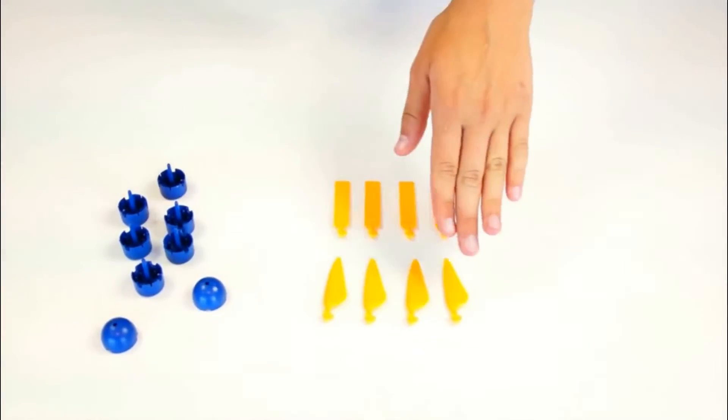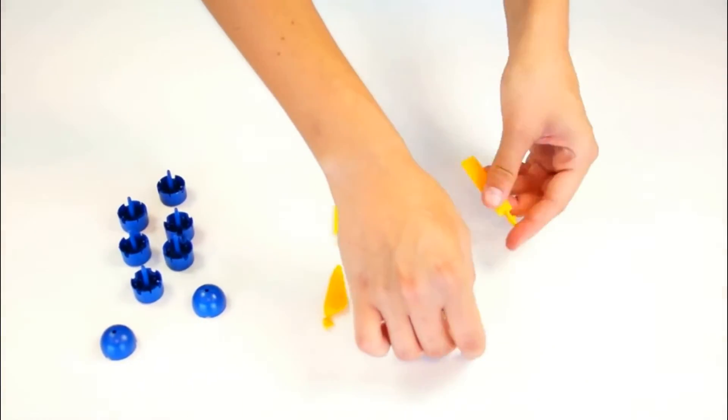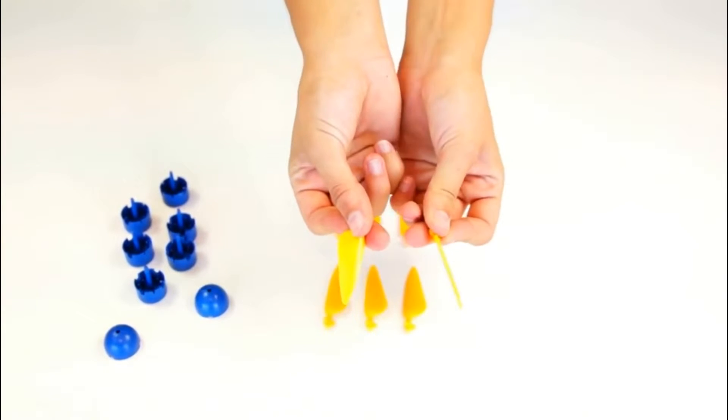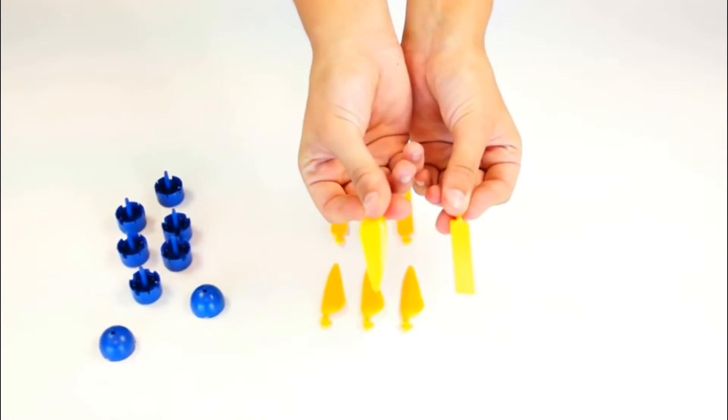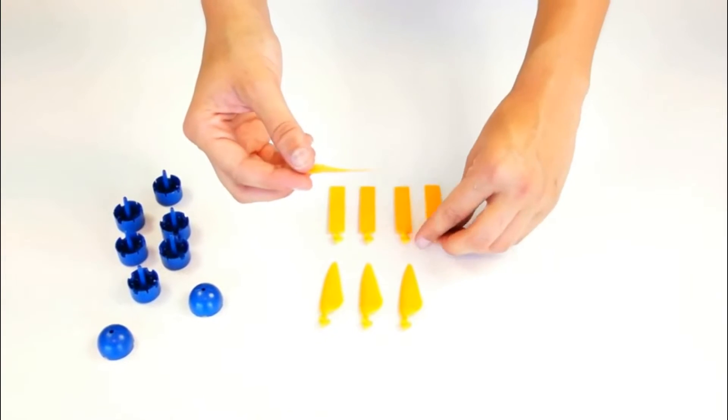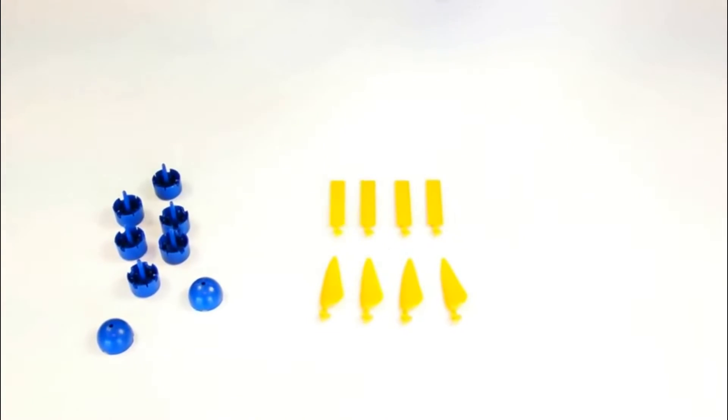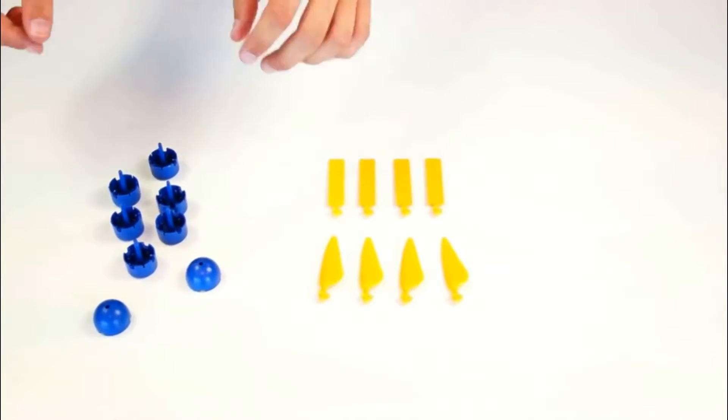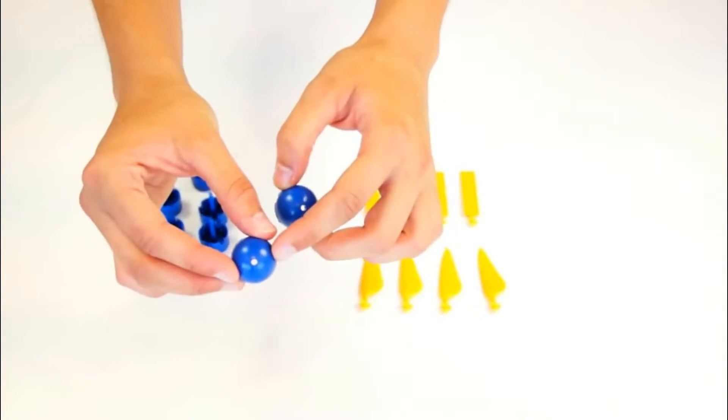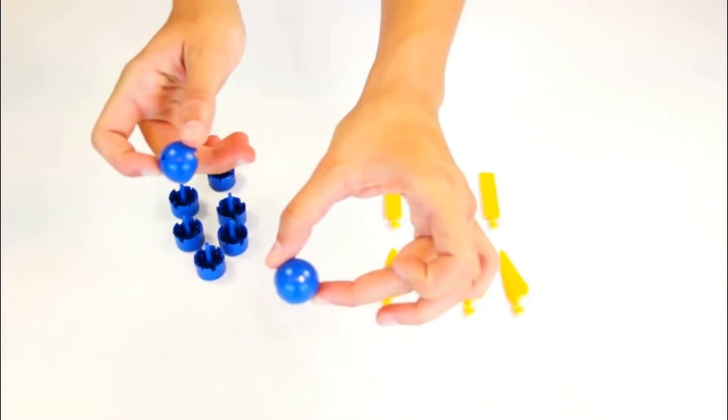In the construction of the rotor blades initially we decide between the flat blade profile and an optimized blade profile. Then we decide whether we want to use one, two, three or four blades. Finally we have to choose a specific pitch of the rotor blades.